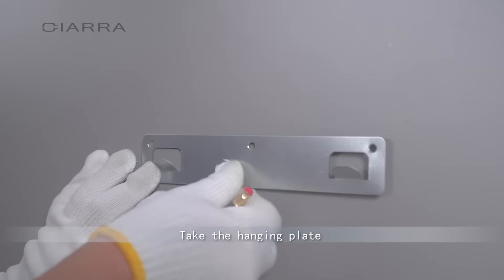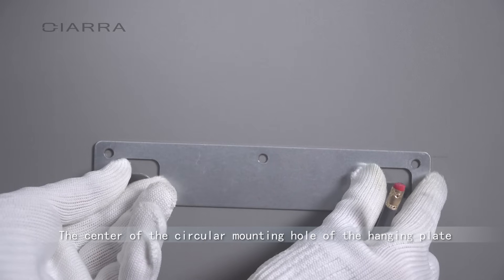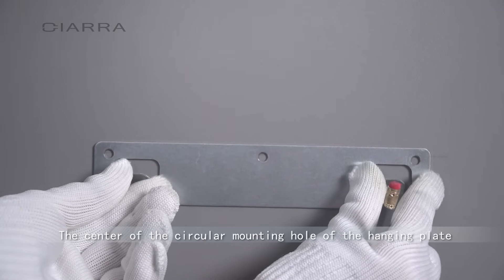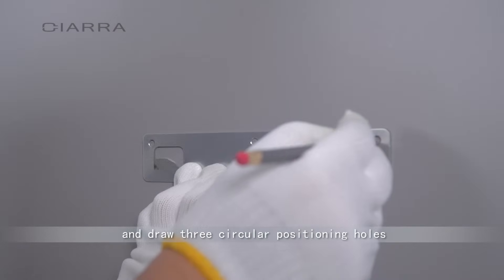Take the hanging plate and place it on the horizontal straight line marked. The center of the circular mounting hole of the hanging plate coincides with the straight line, and draw three circular positioning holes.